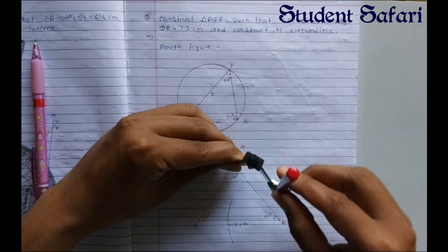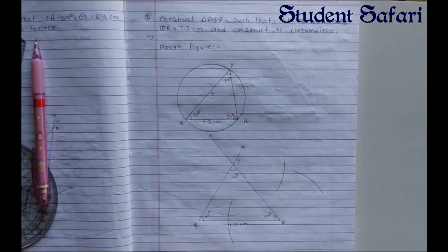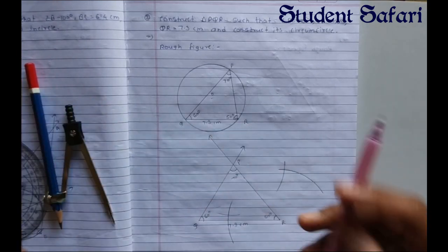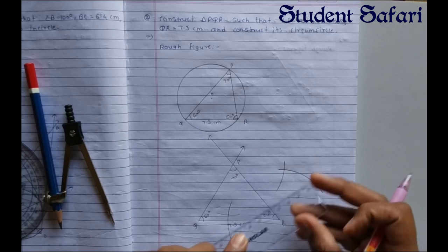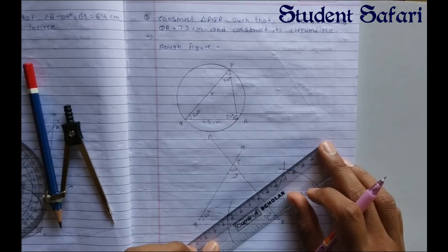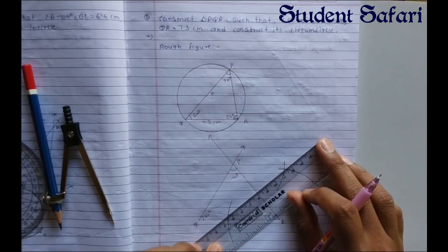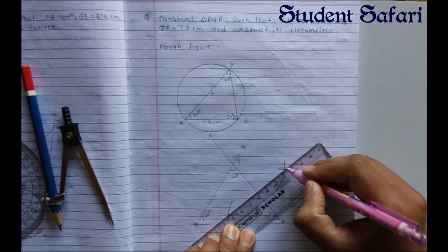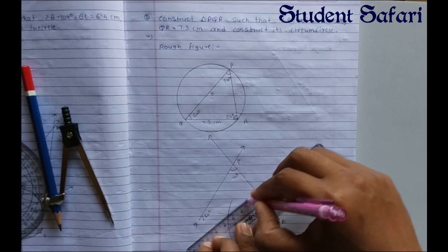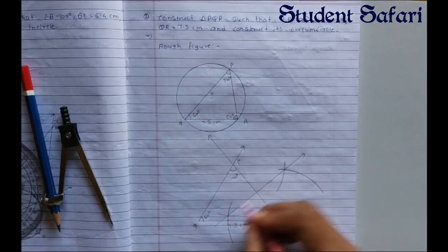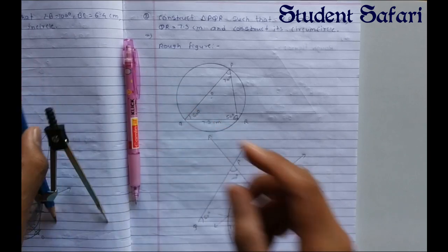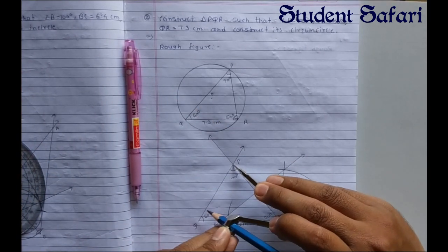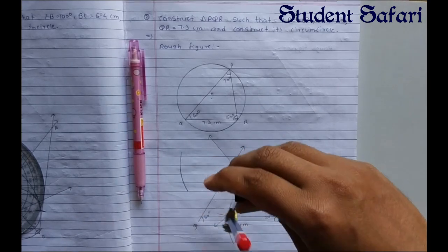Mark arcs on both sides from each endpoint of PR. After joining the two intersection points we get the bisector of segment PR. Similarly, draw the bisector of segment PQ: take half-and-more distance in the compass and mark arcs on both sides.